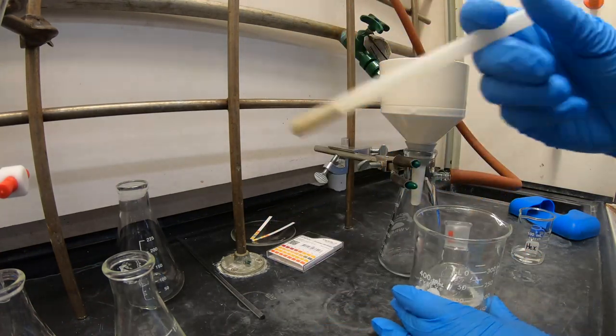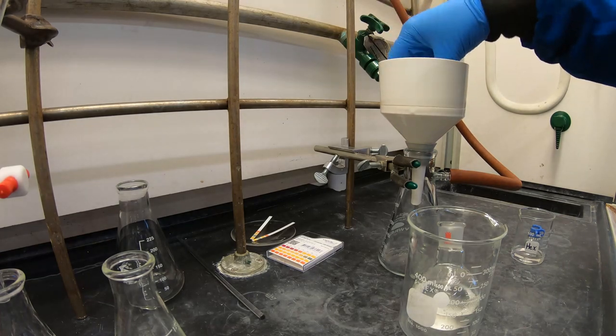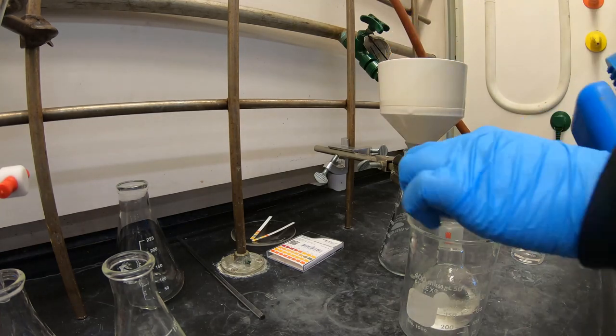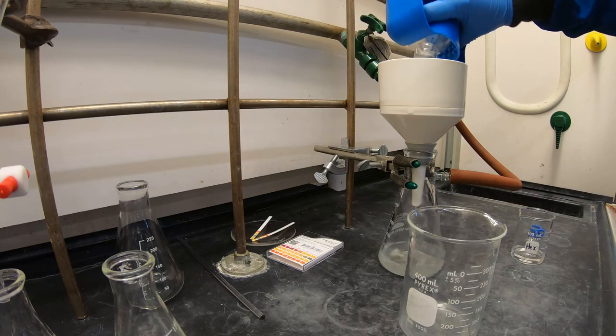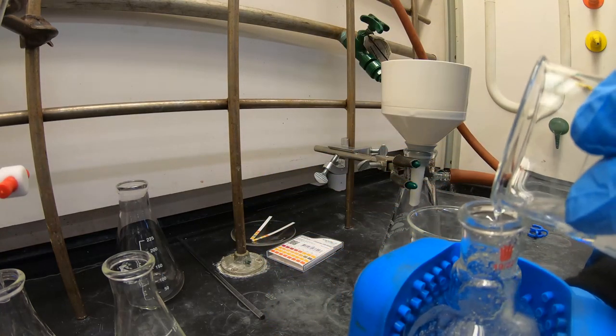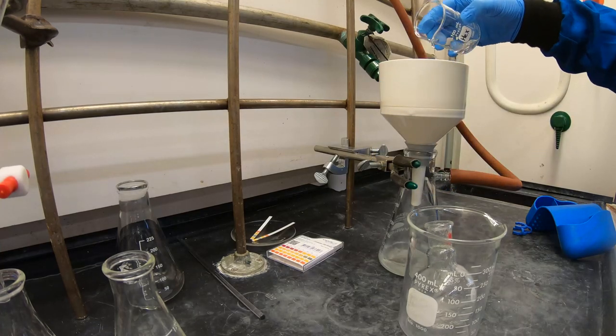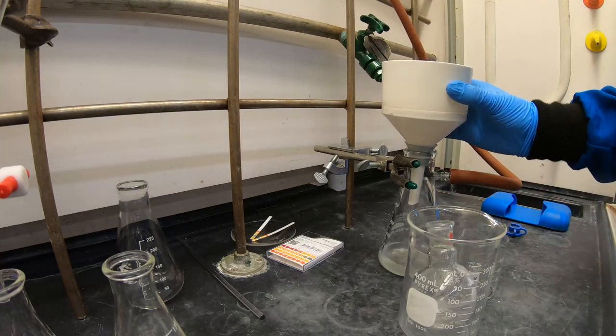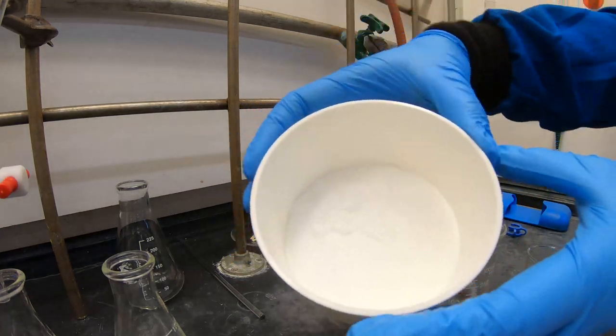Now filter off any solid that has formed using a vacuum filtration system. Rinse the solid with cold hexanes. The solid that has formed during reflux is a byproduct. It can now be disposed of into the waste.